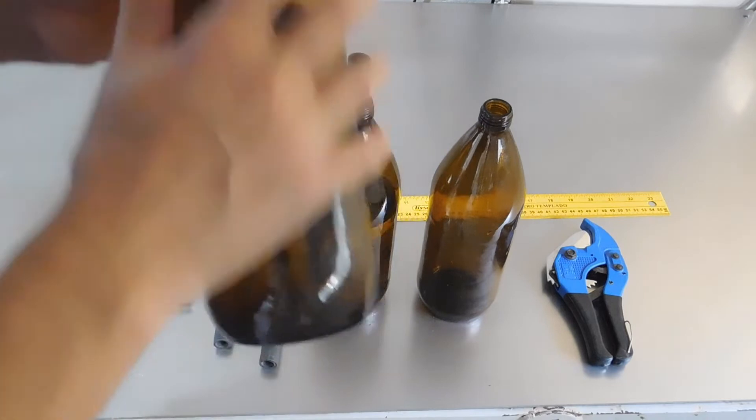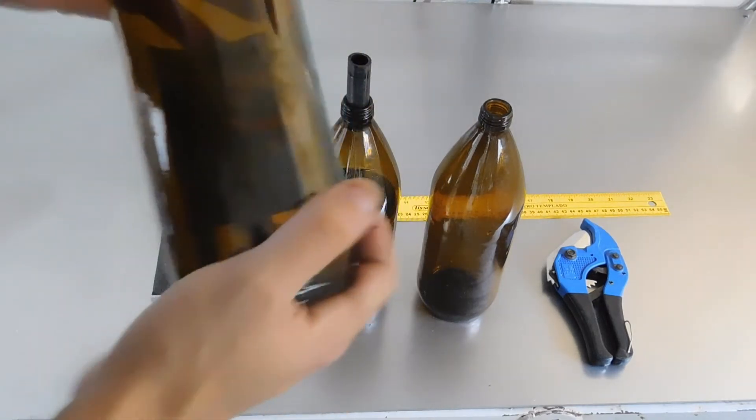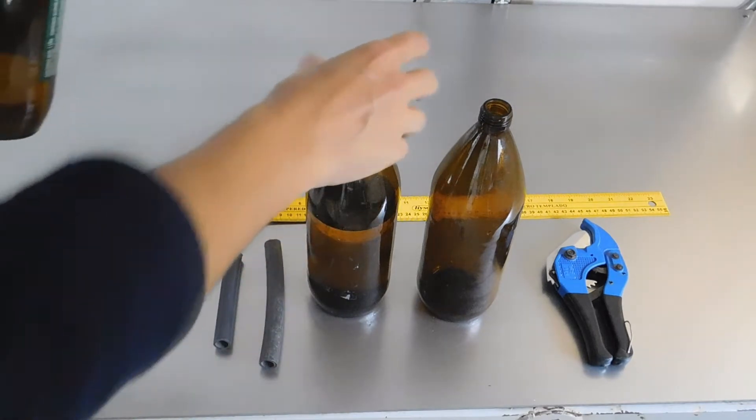Mi idea básica era utilizarlos para el cultivo de microorganismos. Pero se me ocurrió otra idea que quería mostrarles en este video, de la cual se obtiene un vórtice de forma sumamente simple, con muy pocos materiales.